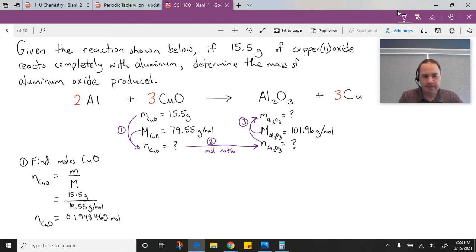Now that I've calculated my moles of copper 2 oxide, my next step is to do the mole ratio. We want to find the moles of aluminum oxide, so we set it up as the moles of copper 2 oxide times the ratio from our balanced chemical equation.